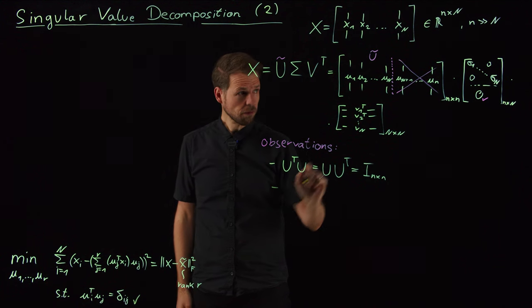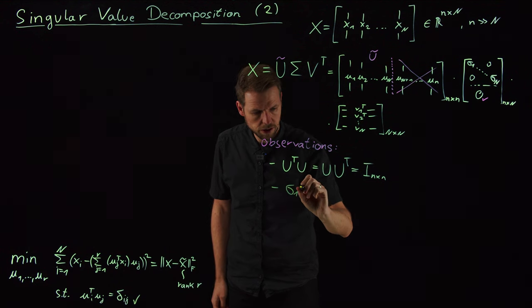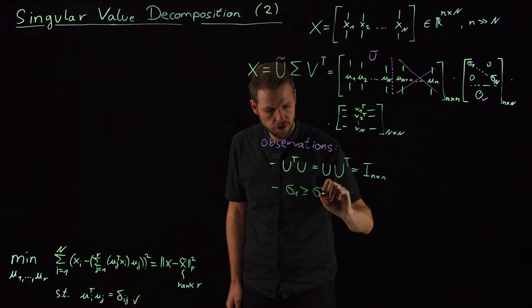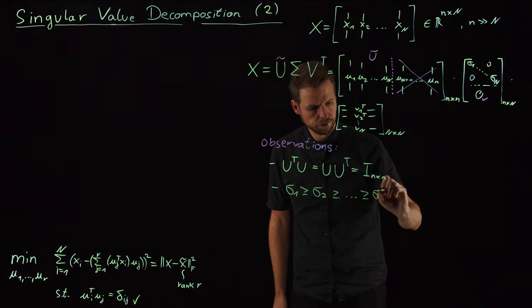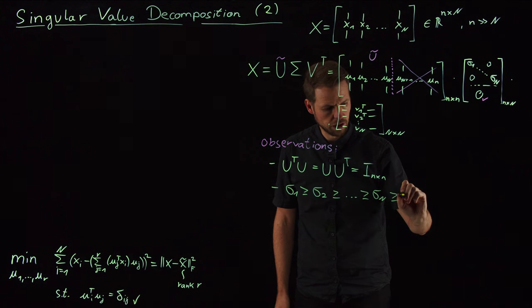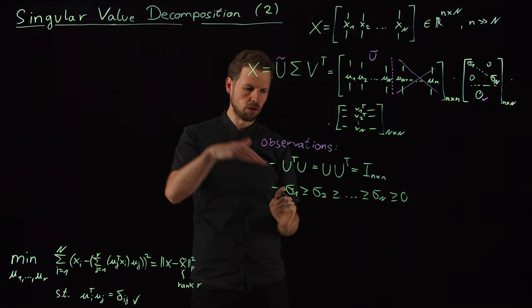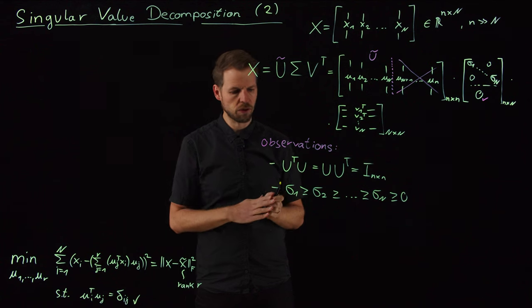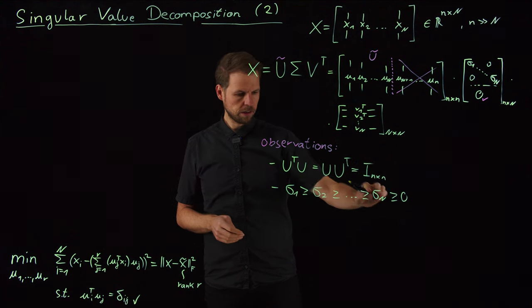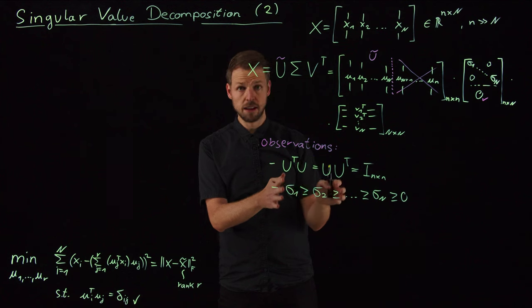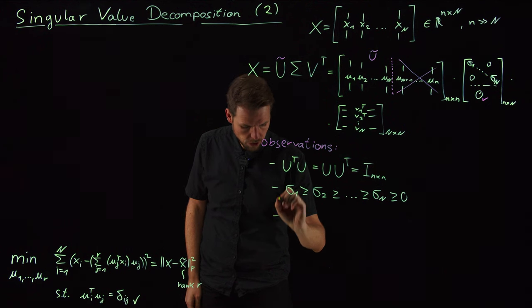So the first one is the singular values, is what we call them, on the diagonal, are sorted. So I have singular value one is greater than or equal to singular value two, greater or equal to the third one, and so on, until the last one. And this is greater than or equal to zero. So they are all non-negative. They are sorted. They could all be equal, but usually we have a strong decay from the first to the next. Given that we have structure in the data, we will see this in a second. And so we have a sorted row of singular values. And this really carries the importance of these individual vectors.